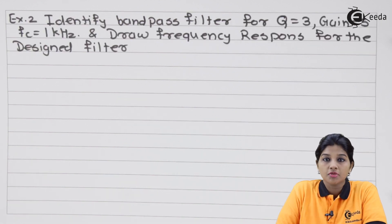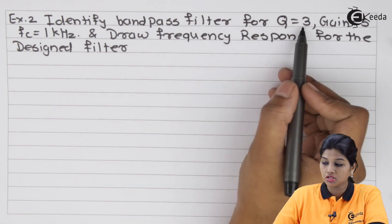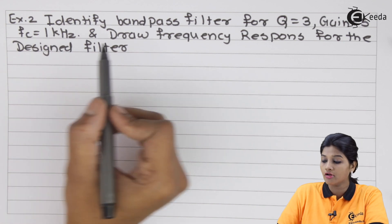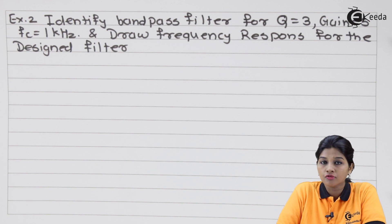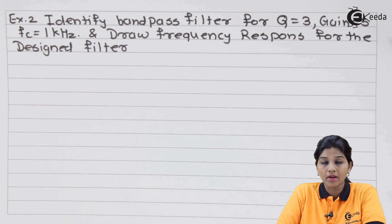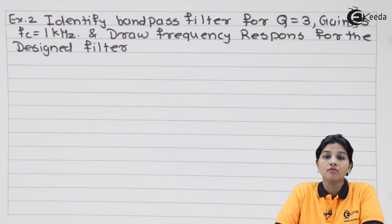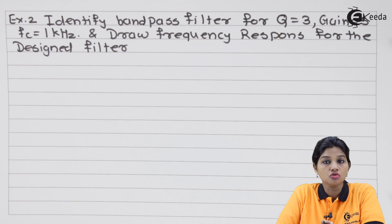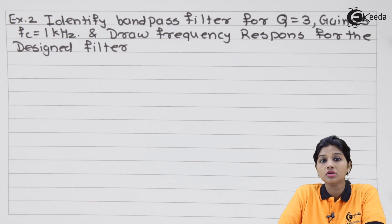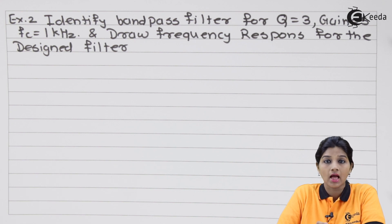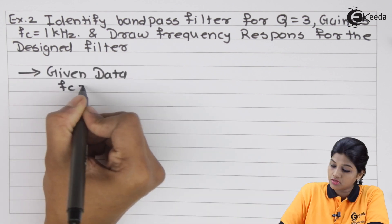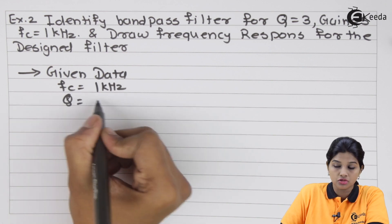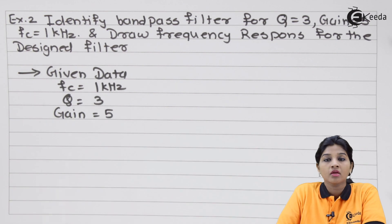Now let's move to Problem 2: Identify the band pass filter for Q equals 3, gain equals 5, fc equals 1 kHz, and draw the frequency response. Here only Q, gain, and fc are given; fh and fl are not given. Since Q equals 3, which is less than 10, the filter is a wide band pass filter consisting of a first order high pass filter and a first order low pass filter.